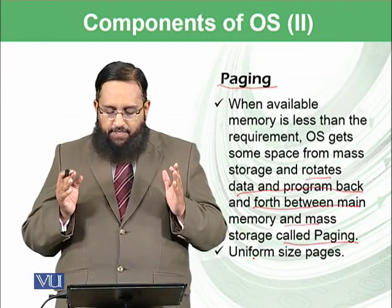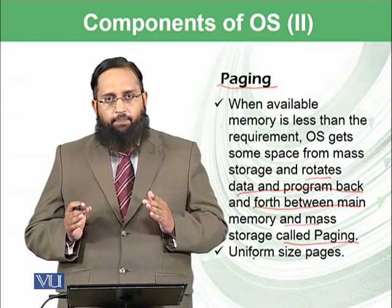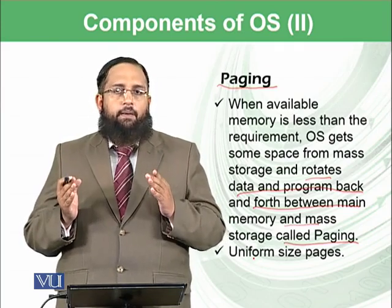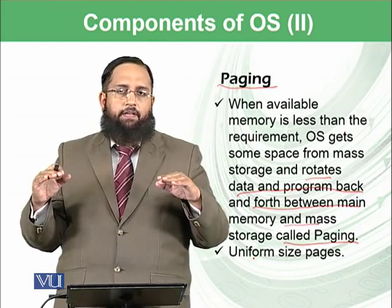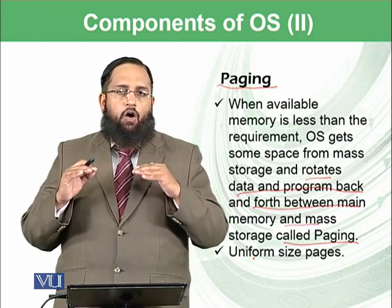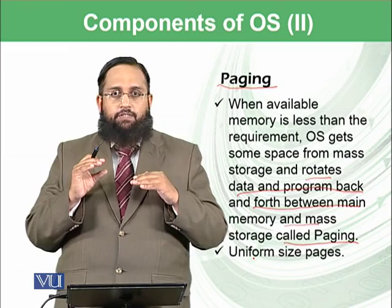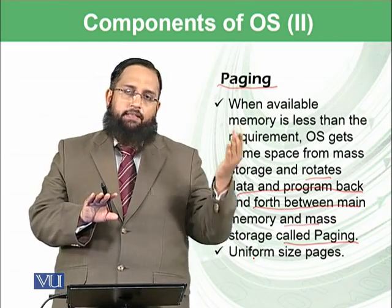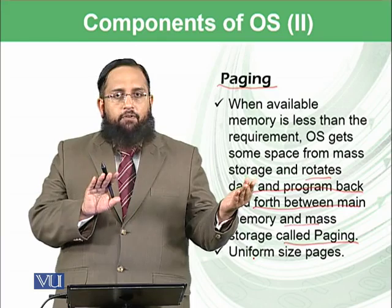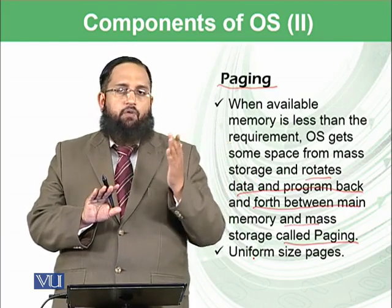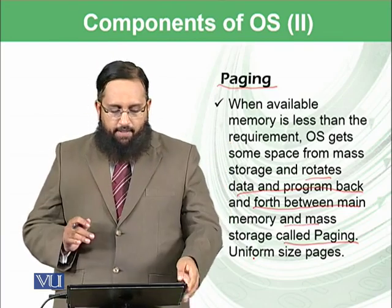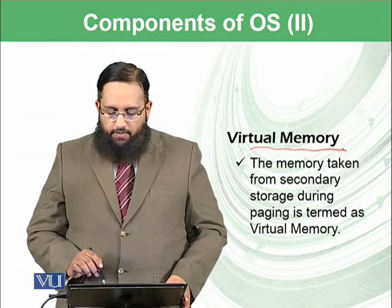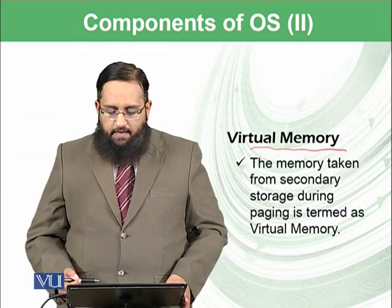In paging, memory is divided into uniform sizes. Different applications running on main memory are divided into small equal-sized units called pages. Some of these pages are available in the RAM and some in secondary storage. Whenever pages stored in secondary storage are needed, they are retrieved back into main memory. Such memory taken from mass storage is known as virtual memory — the memory taken from secondary storage during paging is termed virtual memory.